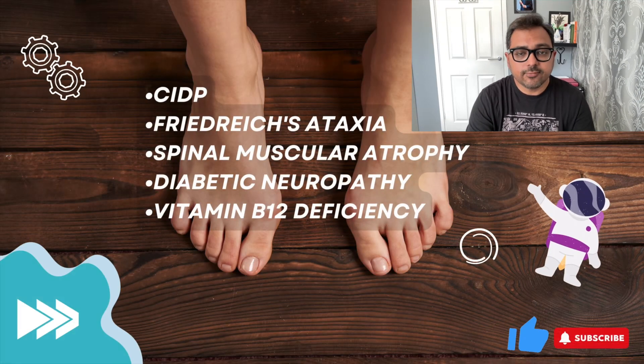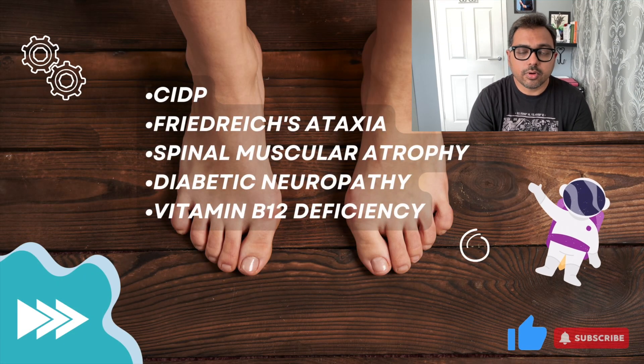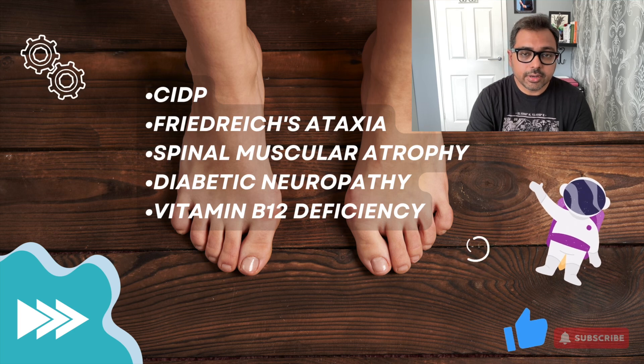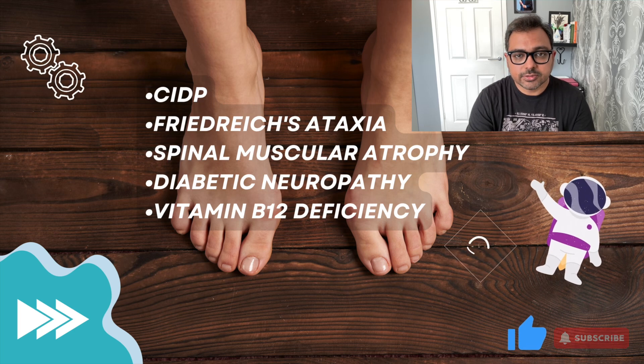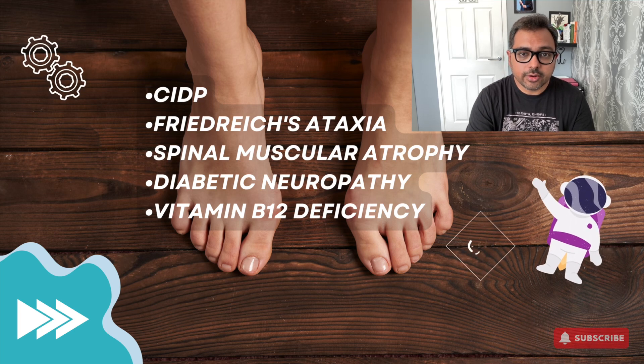The differential diagnoses include chronic inflammatory demyelinating polyneuropathy (CIDP), diabetic neuropathy, Friedreich's ataxia, spinal muscular atrophy, and vitamin B12 deficiency.